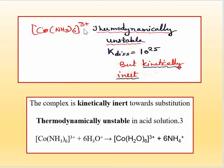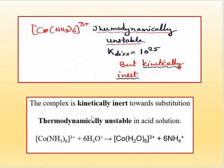Now let's look at the cobalt amine complex. The cobalt amine complex is thermodynamically unstable — the dissociation constant is very high, 10 to the power 25. But it is kinetically inert towards substitution reactions. The cobalt complex is not stable in acidic medium; the amine complex is thermodynamically unstable, but it is kinetically inert. The substitution reaction does not occur easily under normal conditions, though it is unstable under acidic conditions.